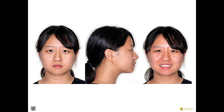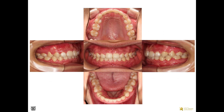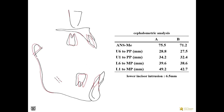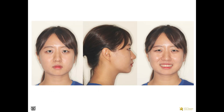Post-treatment facial photographs showed a balanced facial profile with improved chin position. Overbite and overjet were also improved. Mandibular plane closed about 4 degrees, and ANB was improved from 6.3 to 2.8 degrees. Pogonion moved forward about 5.2 millimeters. Amount of lower incisor intrusion was 6.5 millimeters. Results were stable after 14 months of retention.